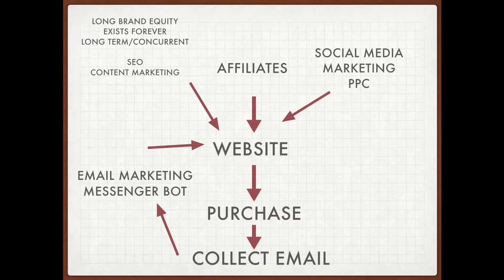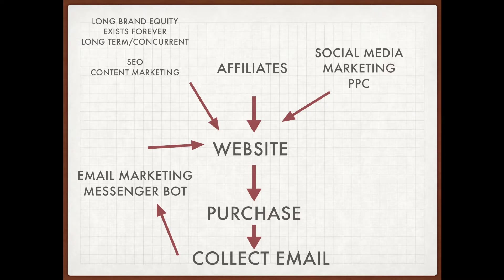The second traffic generation method would be affiliate programs. A lot of e-commerce companies have affiliate programs where they offer discount codes — for example on Instagram you see brands saying 'use discount code something for 20% off.' Companies recruit affiliates and bring them into affiliate programs, and the affiliates promote the brand on their behalf.